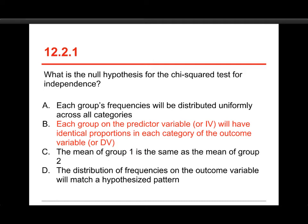Let me just mention, answer A could be the null hypothesis for the goodness of fit test, where you have a single categorical variable, as long as you are hypothesizing a uniform distribution.